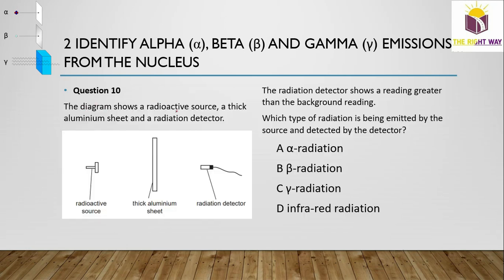Question 10: A radioactive source, thick aluminum sheet, and radiation detector are set up. The detector shows a reading greater than background radiation, meaning particles are crossing the aluminum sheet. Alpha and beta particles cannot cross a thick aluminum sheet, but gamma radiation can. Therefore, gamma radiation is detected at the detector.